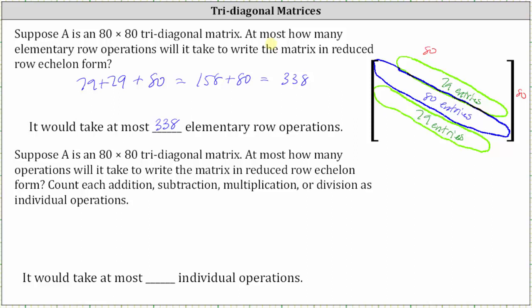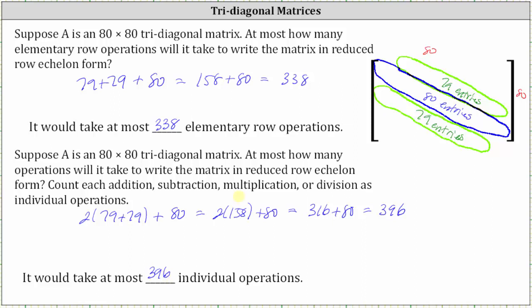For the last part, how many individual operations would it take to write the 80 by 80 matrix in reduced row echelon form, counting addition, subtraction, multiplication, or division as individual operations? It would take up to two individual operations to get zeros above and below the main diagonal, so that is two times the quantity 79 plus 79, plus one individual operation per diagonal entry to get ones, so plus 80. This gives us two times 158 plus 80. Two times 158 equals 316, and 316 plus 80 equals 396. It would take at most 396 individual operations to write the matrix in reduced row echelon form.